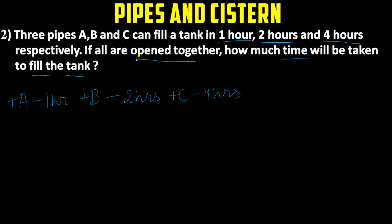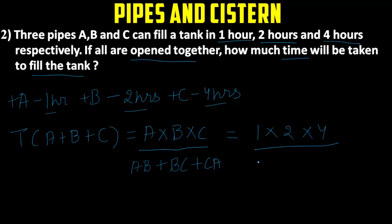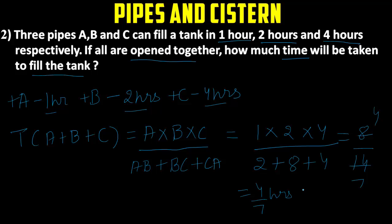We have to find the time taken when all pipes are opened. The formula is: time taken by A, B, and C together = A×B×C divided by (AB + BC + CA). Putting in the values: 1×2×4 divided by (1×2 + 2×4 + 4×1) = 8 divided by (2 + 8 + 4) = 8 divided by 14, which simplifies to 4/7 hour. That is our answer.